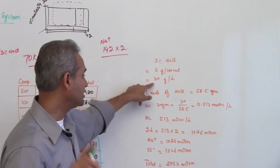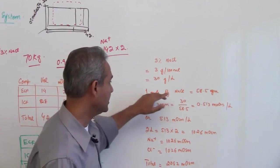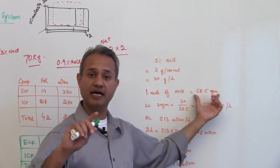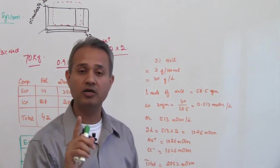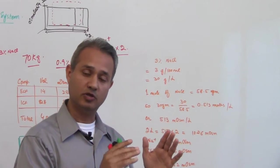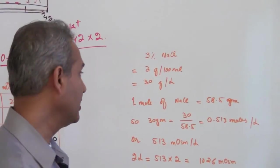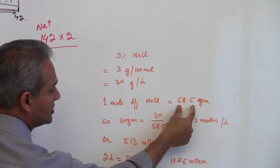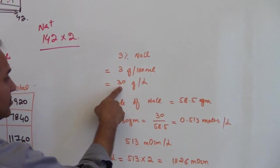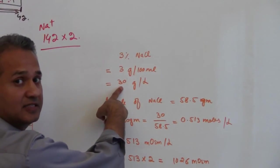Now, we know this thing from our previous lectures that if we have 58.5 gram of sodium chloride in 1 liter that will be called 1 osmolar solution. So if we have 58.5, if I call this about 60, then the gram here we are seeing is 30, so almost half.